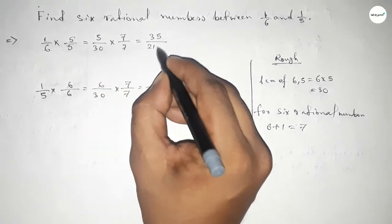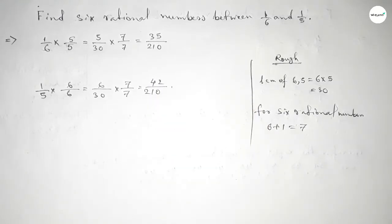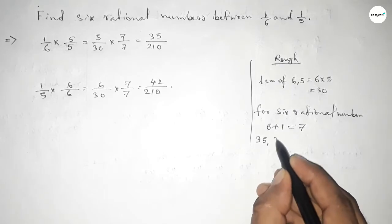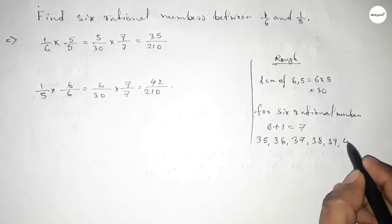This gives us 35/210 and 42/210. Between 35 and 42, we can get six natural numbers.